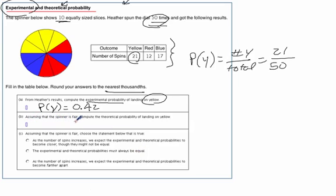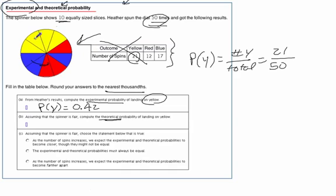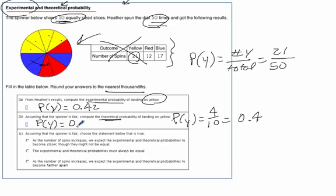For Part B, assuming the spinner is fair — not rigged — compute the theoretical probability of landing on yellow. The theoretical doesn't use the data at all; we only look at our spinner. We've got 10 equal parts, and 4 of them are yellow. So the theoretical probability of yellow is 4 out of 10, which is 0.4.